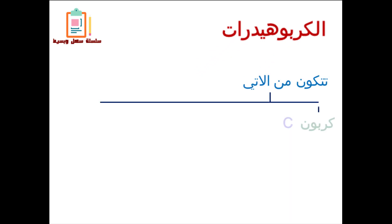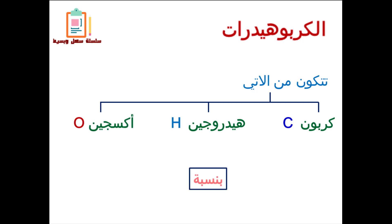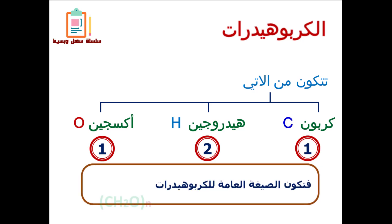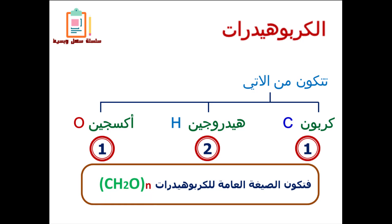الكربوهيدرات جزيئات بيولوجية كبيرة بتتكون من بوليمرات. الجزيء البيولوجي ده بيتكون من كربون وهيدروجين وأكسجين، ثلاث عناصر أساسية في الكربوهيدرات. النسب: ذرة كربون واحدة مقابل ذرتي هيدروجين وذرة أكسجين. الصيغة العامة للكربوهيدرات هي (CH₂O)n.